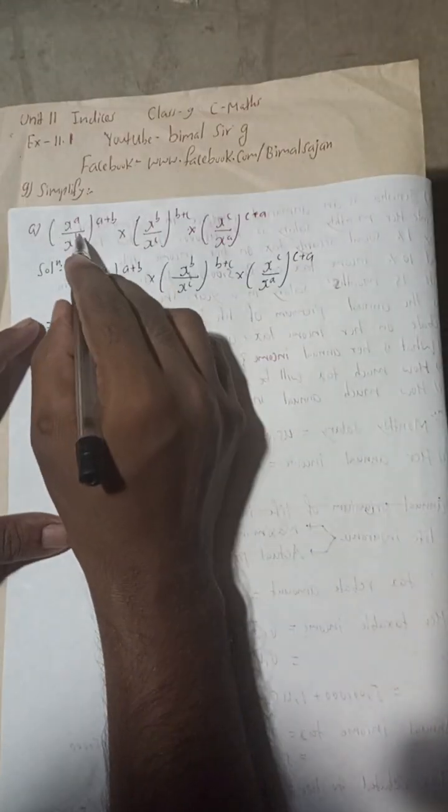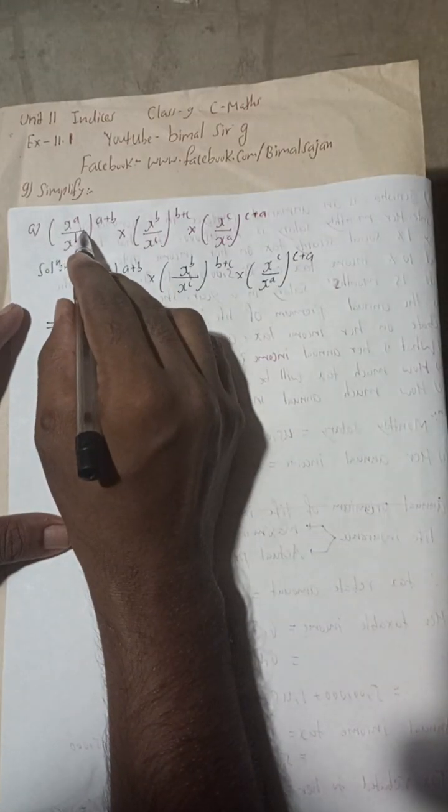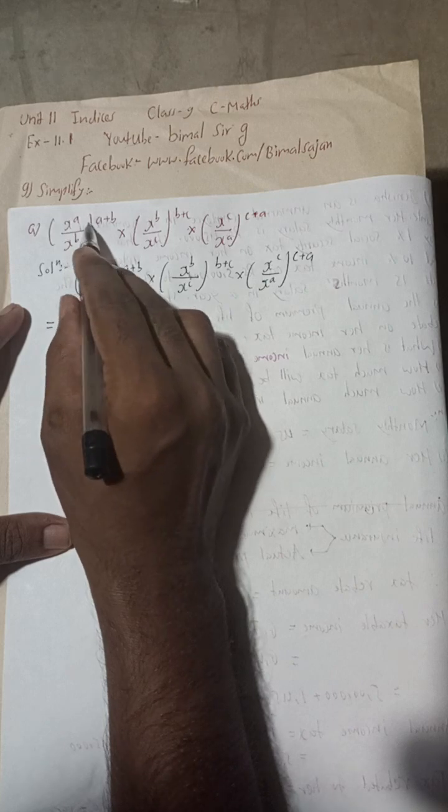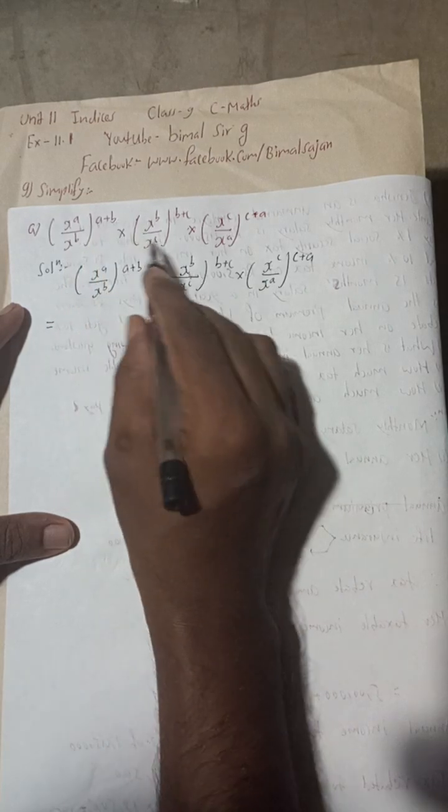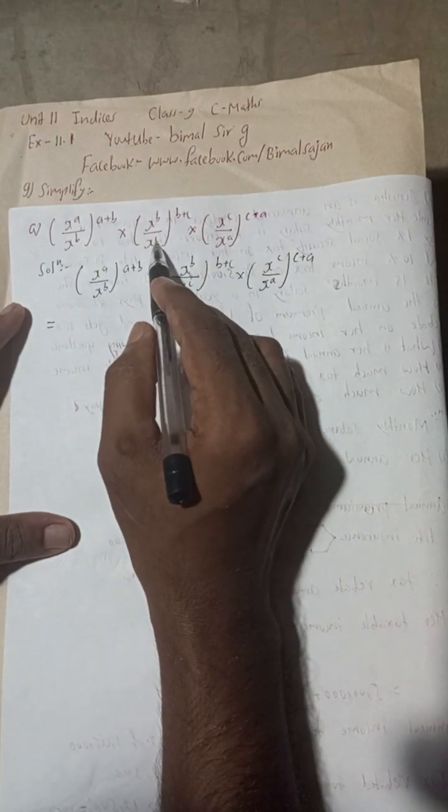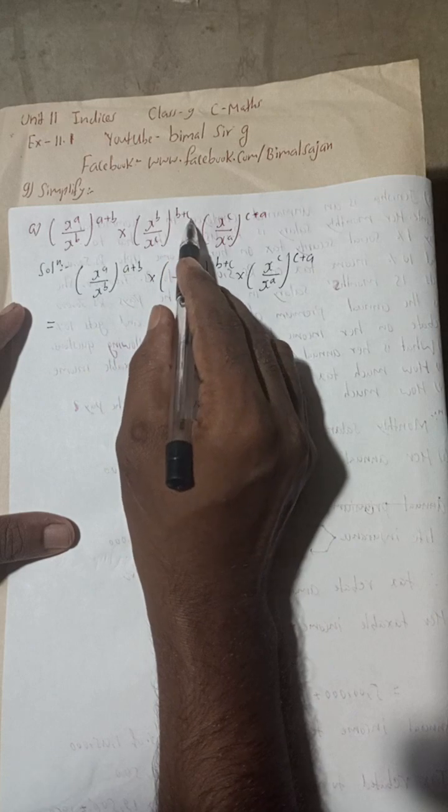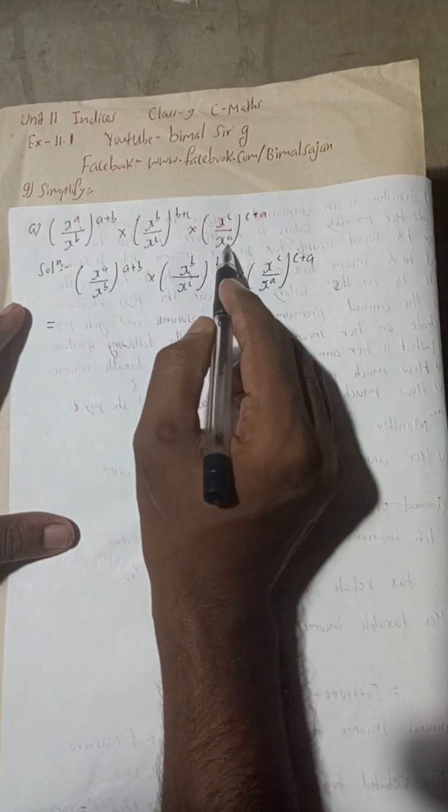Now let's begin the solution. The question is: (x^a/x^b)^(a+b) × (x^b/x^c)^(b+c) × (x^c/x^a)^(c+a). I have written it here.